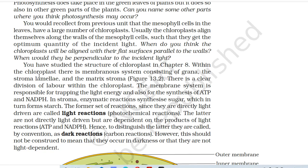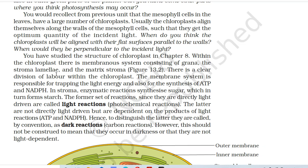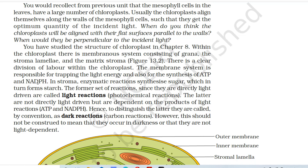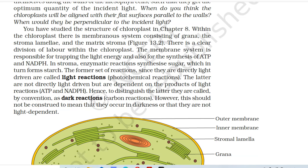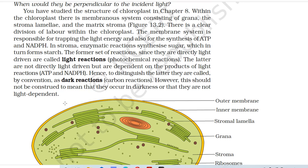You have studied the structure of chloroplasts in chapter 8. Within the chloroplast, there is a membranous system consisting of grana, the stroma lamella, and the matrix stroma. There is a clear division of labour within the chloroplast. The membrane system is responsible for trapping light energy and also for synthesizing ATP and NADPH. In the stroma, enzymatic reactions synthesize sugar, which in turn forms starch. The former set of reactions, since they are directly light-driven, are called light reactions or photochemical reactions. The latter are not directly light-driven but are dependent on the products of light reactions — ATP and NADPH. Hence, to distinguish them, they are called by convention dark reactions or carbon reactions. However, they should not be construed to mean that they occur in darkness or that they are not light-dependent.